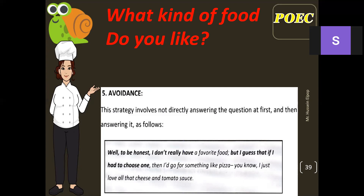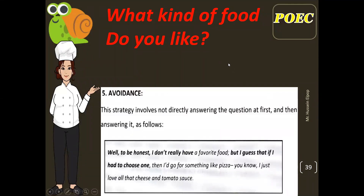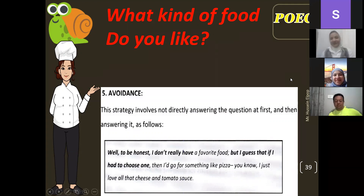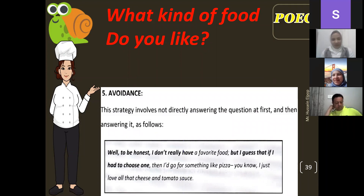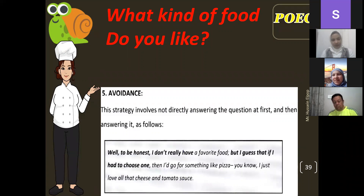The fifth technique is avoidance: avoid the question by answering in an indirect way — going around the question. For example: 'Well, to be honest, I don't really have a favorite food, but I guess that if I had to choose one, I would choose such and such.' So you said you don't have a favorite food but still gave an answer. These are the techniques to use in speaking.